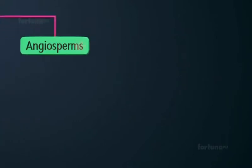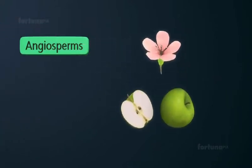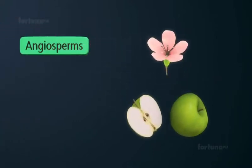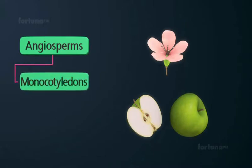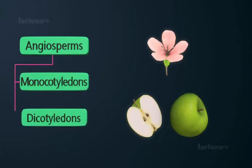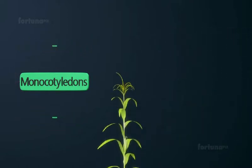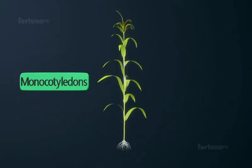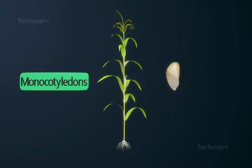Angiosperms produce flowers and seeds that are enclosed in fruit. This phylum can be further divided into the two classes of Monocotyledons and Dicotyledons. Monocot plants such as maize have fibrous roots and only one cotyledon in their seeds.